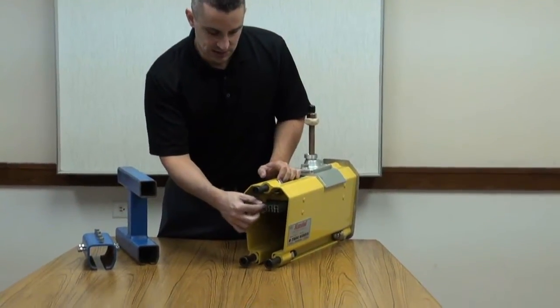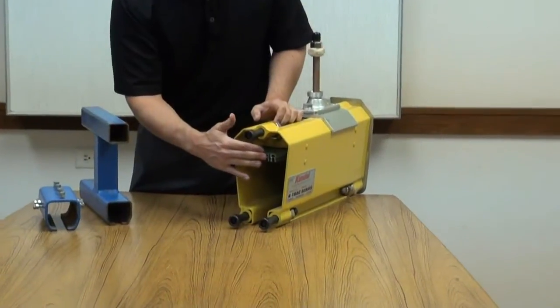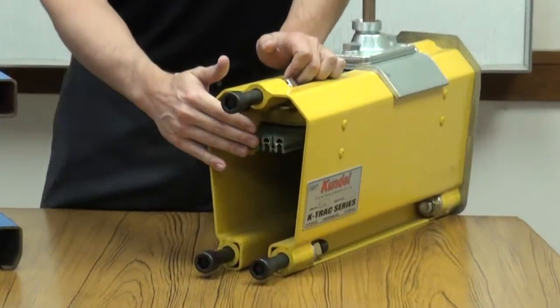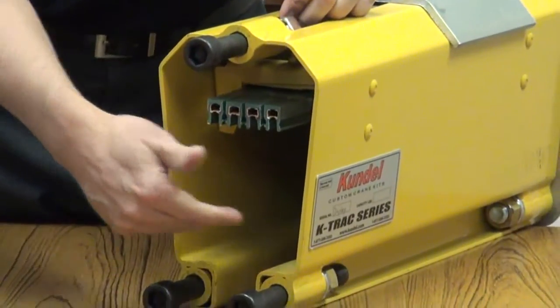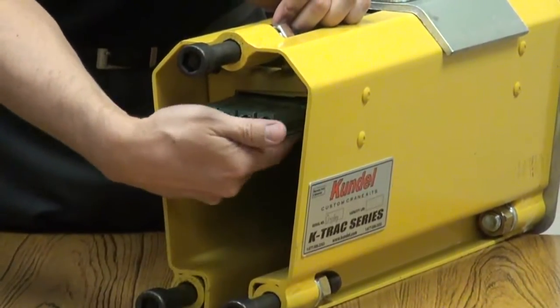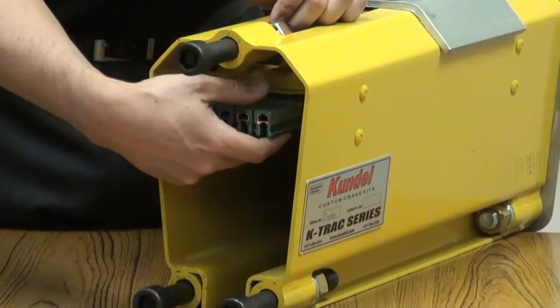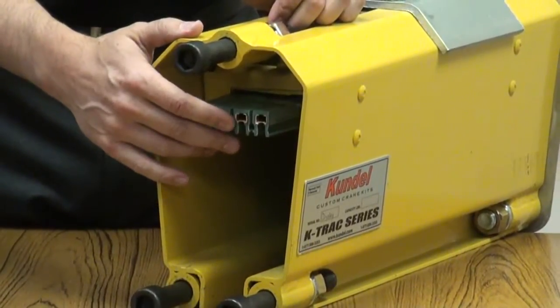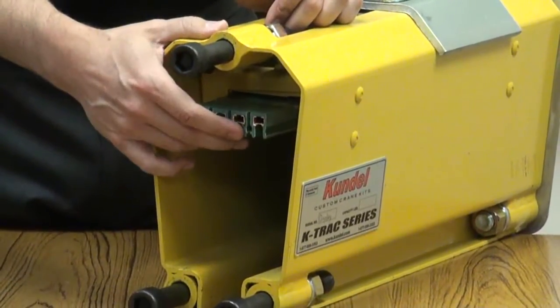You'll notice also inside here is the internal conductor bar that we talked about in other videos. The end trucks and trolleys slide back and forth inside this section and collect all the power that's located inside this rail. Works very similar to how track lighting would slide back and forth and collect power.